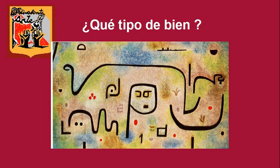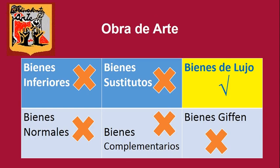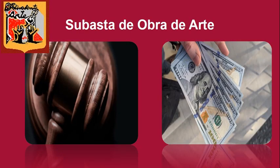Acá les pongo una obra de arte de Paul Klee; el cuadro se llama Insula Dulcámara. ¿Qué tipo de bien es? En la clase anterior nosotros habíamos estudiado los tipos de bienes: bienes inferiores, bienes normales, bienes sustitutos, bienes complementarios, bienes de lujo y bienes Giffen. Como es una obra de arte y es única, es un bien de lujo.